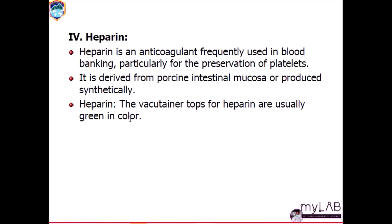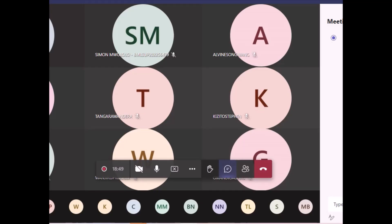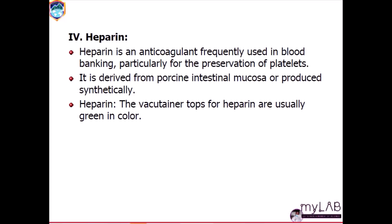Heparin is another anticoagulant used in blood banking. You may have come across it in other blood collections for different laboratory samples. Heparin is used frequently, especially for the preservation of platelets. It is derived from bovine intestinal mucosa, or can also be produced synthetically. The vacutainer tops for heparin are usually green in color.